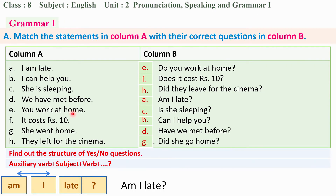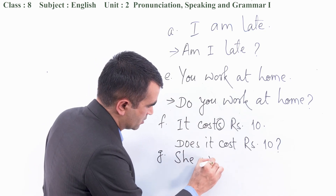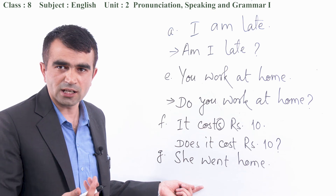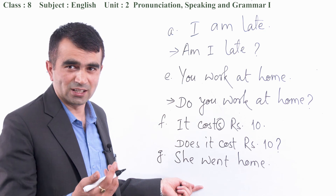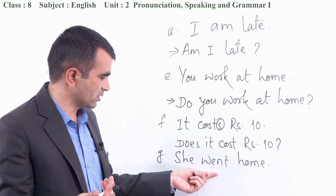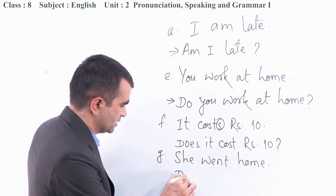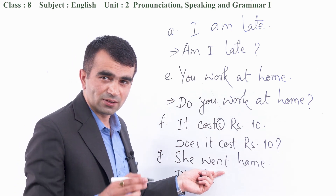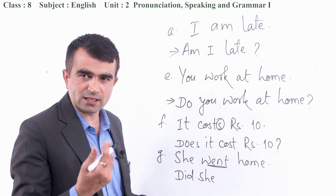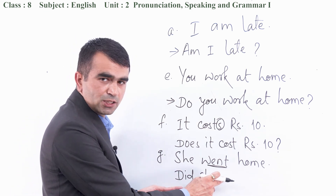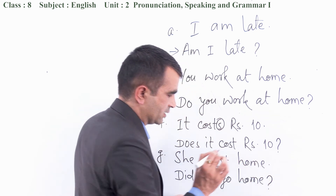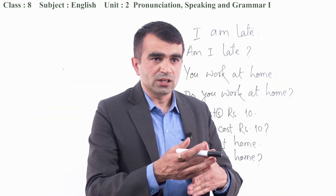For statement G: 'She went home.' Can you use 'do' or 'does'? No — you use 'did' because it's in the past tense. When you use 'did', you use the base form of the verb. So 'went' becomes 'go': 'Did she go home?' That is the way you can change statements into yes/no questions.